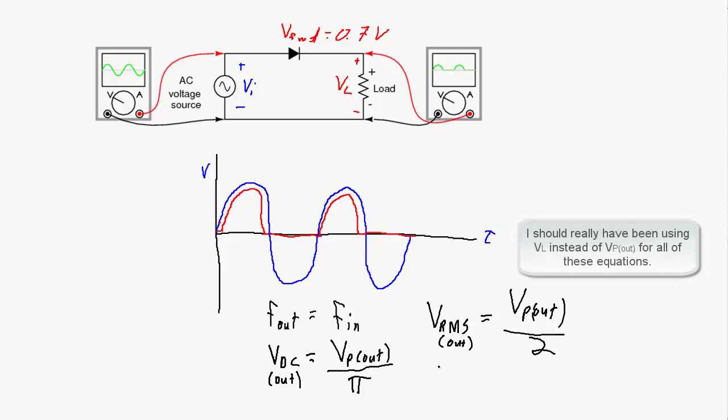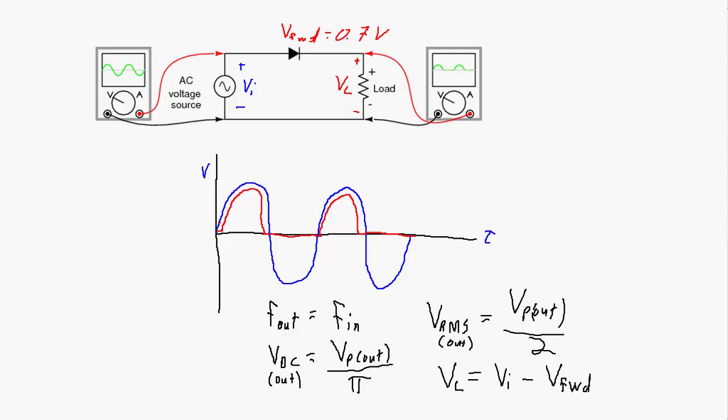And of course, the voltage of the output signal is going to equal the voltage of the input signal minus the forward voltage of the diode. So hopefully you learned a little bit in this video about half-wave rectifiers, and I'll see you in the next one.